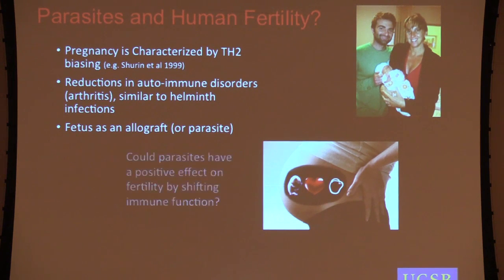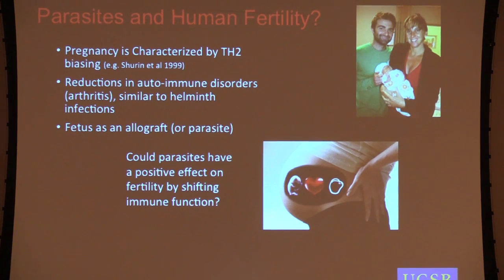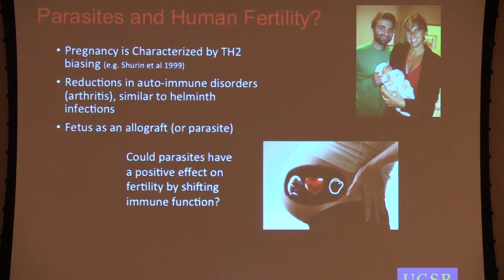This suggests an interesting question: could parasites have a positive effect on fertility by shifting immune function towards a more Th2-biased phenotype? We also see this shifting happening towards the end of the menstrual cycle, perhaps in preparation for implantation. This was in part inspired by a colleague who went to the field with her husband and got pregnant very quickly, and we thought maybe this had something to do with it.